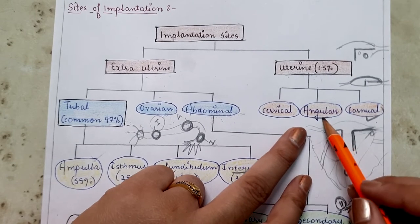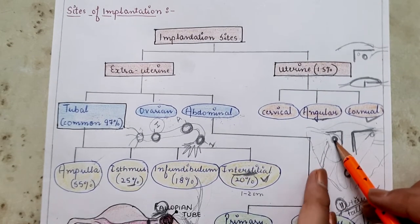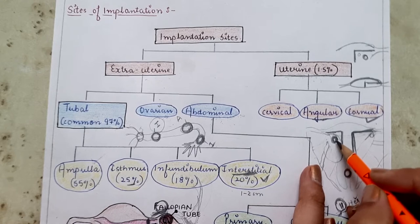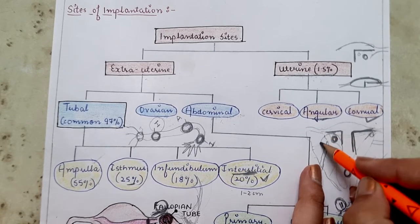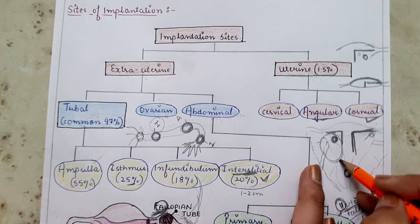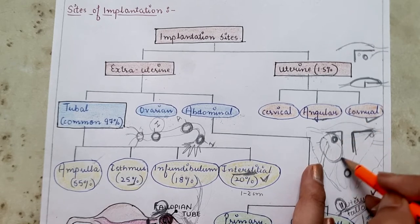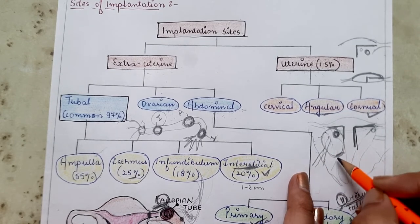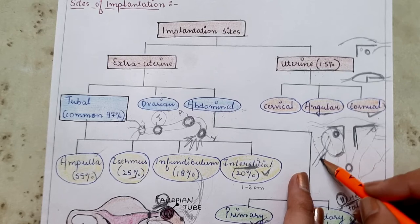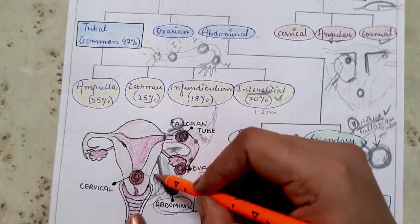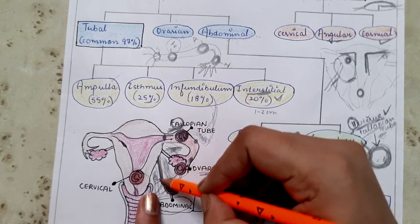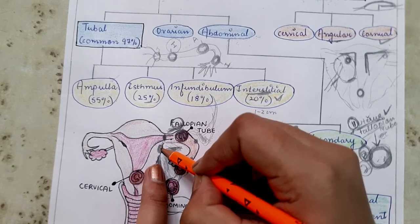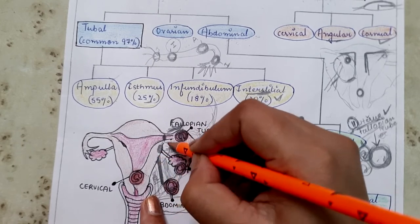Angular pregnancy occurs when the fertilized ovum implants at the lateral side of the uterine cavity. As the pregnancy advances it causes asymmetrical enlargement — the shape of the uterus becomes distorted — as well as lateral displacement of the round ligament.